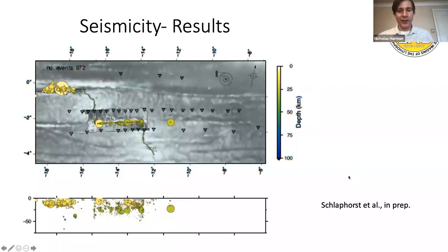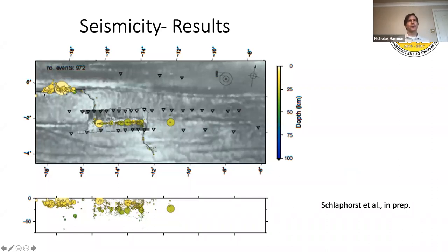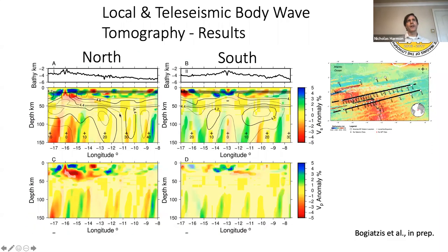A quick show-and-tell about seismicity in the region. We recorded several thousand events along the Chain and along the Romanche. Steve Hicks had a really nice paper about a super-shear magnitude 7.1 earthquake on the Romanche, which was pretty neat and unexpected. We're in the process of writing up the seismicity for the region. We've also done body wave tomography using local seismicity and get a similar pattern to the surface wave anomaly — a low velocity zone beneath the mid-ocean ridge, with the low velocity anomaly more muted in the south compared to the north.